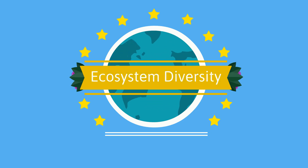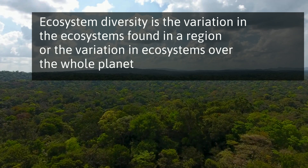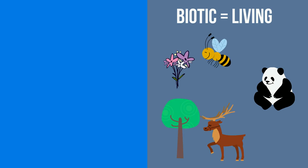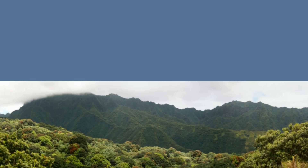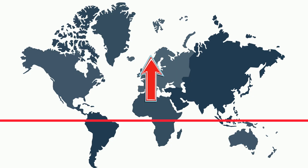Ecosystem diversity is the variation in the ecosystems found in a region, or the variation in the ecosystems over the whole planet. It is a measure of the variety of biotic or living factors and non-living or abiotic factors present in an ecosystem. Rainforests usually have a high ecosystem diversity, and deserts and polar regions usually have a low ecosystem diversity. In general terms, biodiversity is greater at the equator and decreases as you move away from the equator.